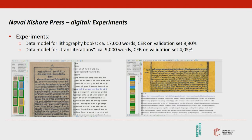Currently, we are experimenting with Transkribus in two directions. On the one hand, we are training HTR Plus models for the recognition of texts printed using the lithographic method — our first attempt with, strictly speaking, handwritten material. Our first model is based on approximately 17,000 words of ground truth and has been trained to recognize the hand of two different writers. This model already achieves a character error rate of 9.9% on the validation set, and we are now creating more ground truth to improve its performance.